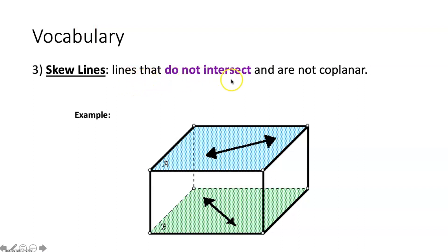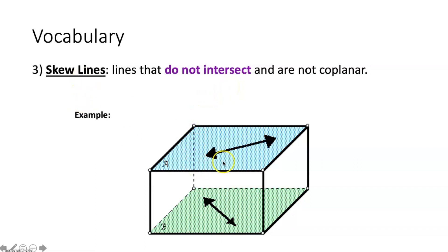Skew lines are two lines that do not intersect and are not coplanar. This line up here exists in plane A, traveling in two directions, whereas this line down here exists in plane B, traveling in different directions — therefore they are skew. Two parallel lines, even if drawn on separate planes, can always be contained within the same plane, so they will never be skew. Skew lines do not intersect, are not coplanar, and are not parallel.